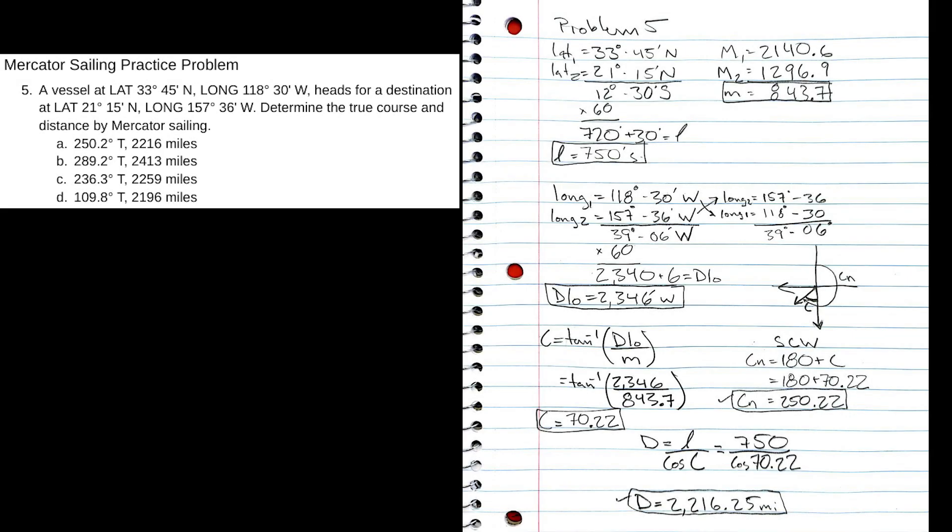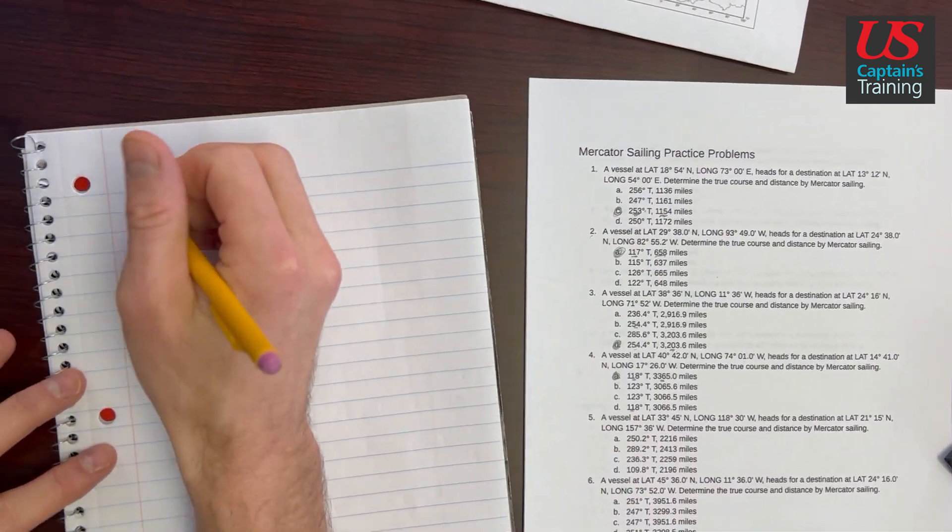Hey, Neil Smith here. In this video, we use Mercator Sailing to solve for true course and distance to a destination, given the coordinates of the start point and the destination. Mercator Sailing practice problem five.